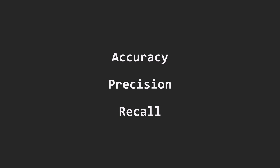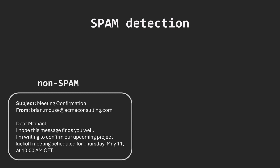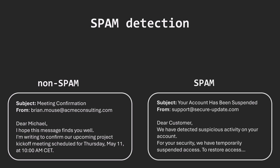We will explore these metrics using a spam detection example. Emails are classified into two categories – non-spam, often called HAM, which are normal emails, and spam, unwanted emails.